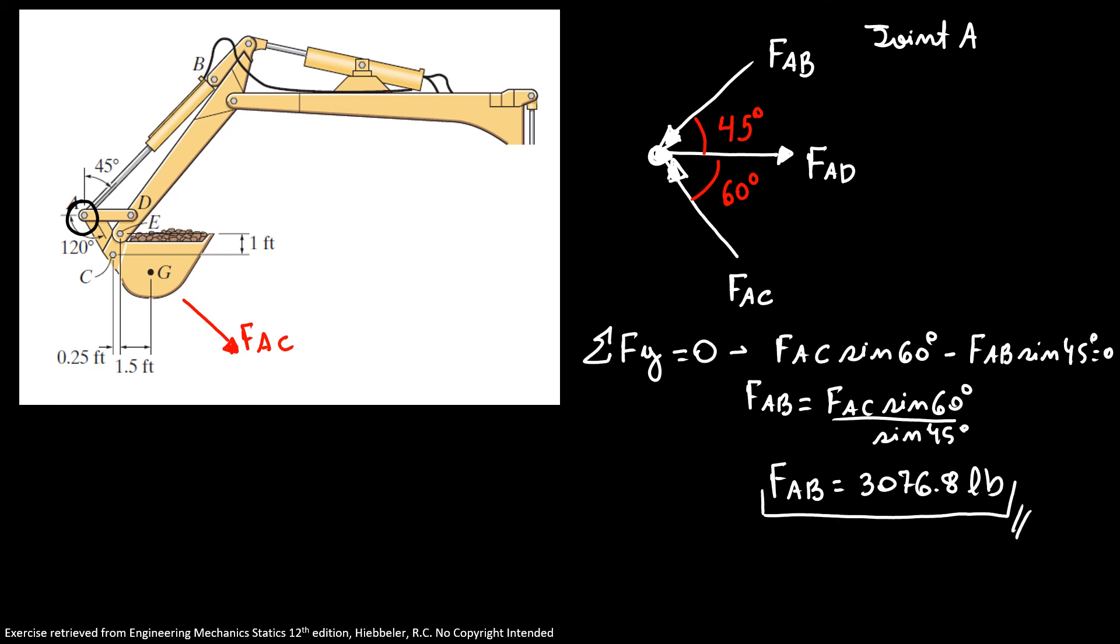Finally, we have the sum of forces in X is equal to zero. We have force AD minus force AC cosine of 60 minus force AB cosine of 45 is equal to zero. So we have our force AD is equal to 3,431.7 pounds.